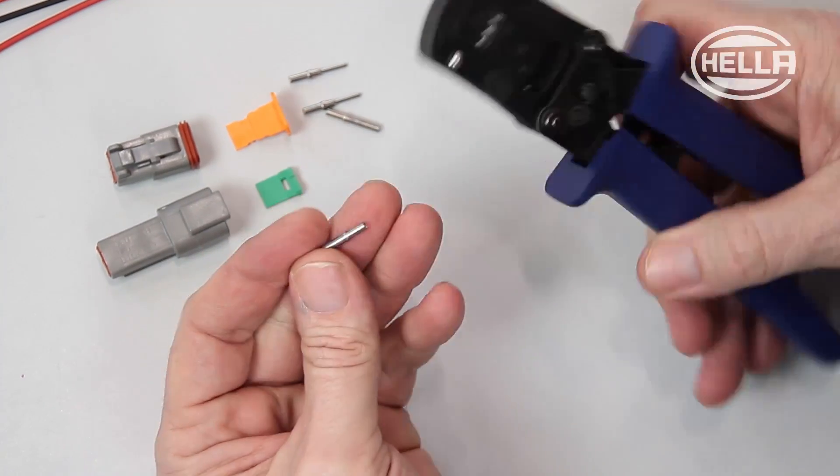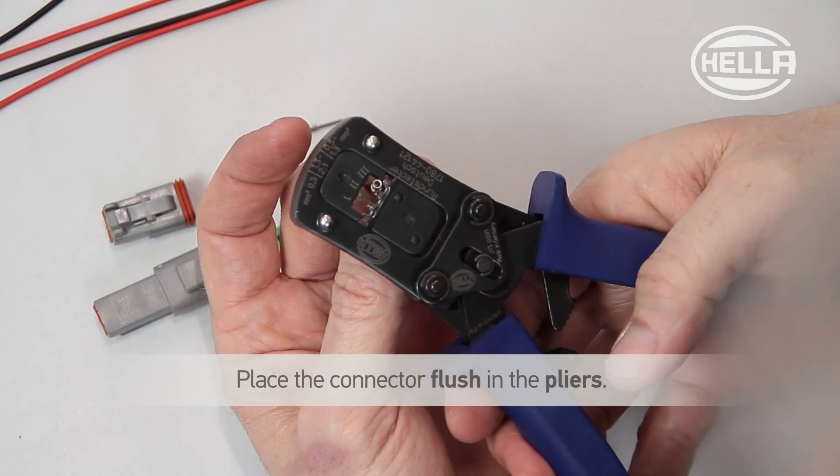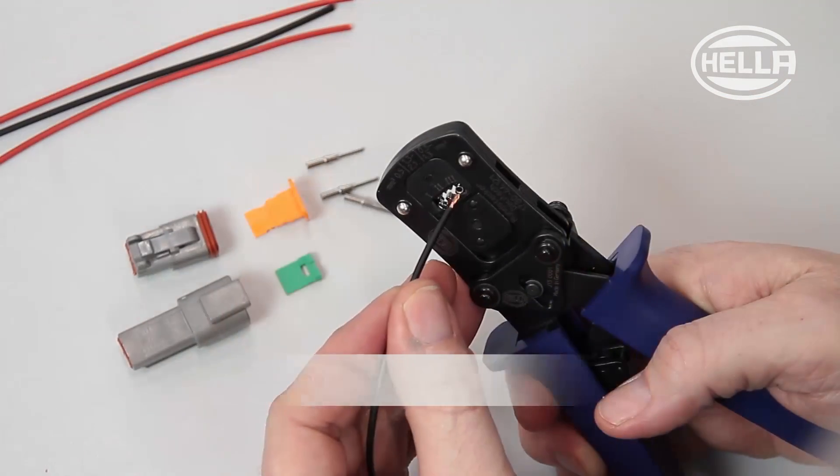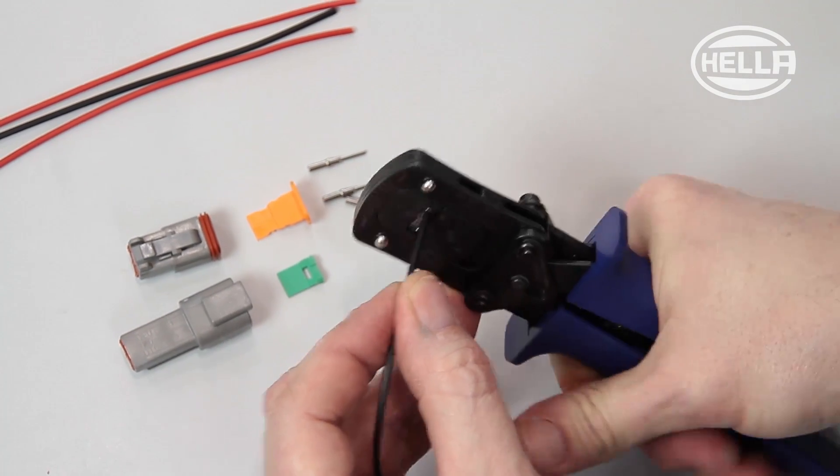First strip the vehicle cable to a maximum of 3-5mm with a suitable tool and put the connector in the pliers so that it is flush with the front. Close the pliers to crimp the contact sleeve with the cable.